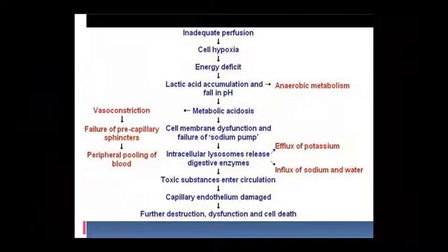Yeh phir se pathophysiology bataai gayi hai ki isme kya hota hai - inadequate perfusion ho jaayega, blood kum hote oxygen kum ho jaayegi, tissue tak nahi pahuncha paayegi jis se cell mein hypoxia ho jaayega, energy kum ho jaayegi. ATP dependent pathway chalta hai to energy bhi nahi produce hogi, sodium-potassium pump disturb ho jaayega. Jis se acidic waste - pyruvic acid, lactic acid wagera accumulate ho jaayenge, blood ki pH kum ho jaati hai kyunki aerobic ki jagah anaerobic respiration chalta hai. Blood periphery se nikal karke center mein aane lag jata hai kyunki hamare dimaag ko, kidney ko, muscles ko blood ki bahut zyada aawashyakta hoti hai work karne ke liye.